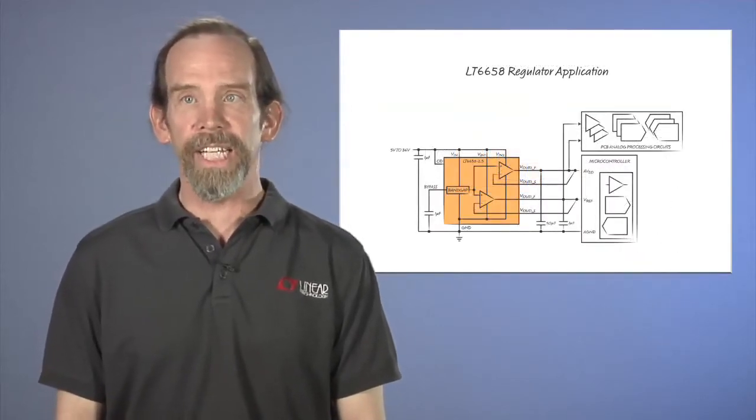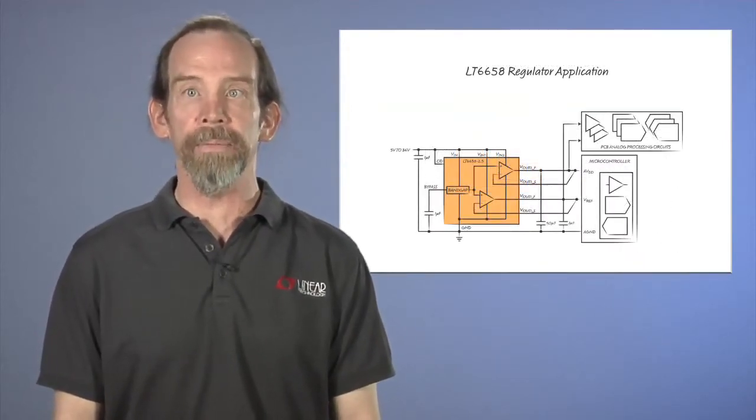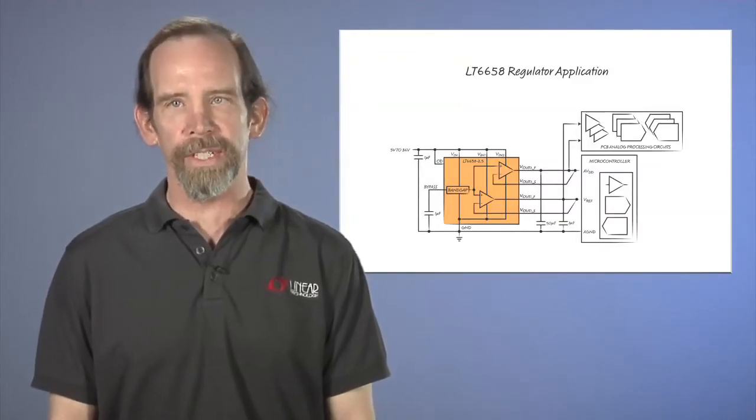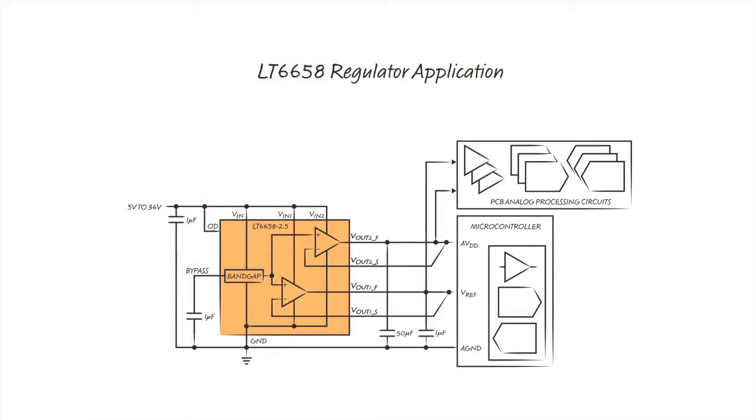The LT6658 is also ideal as a regulated power source for microcontrollers and precision analog circuits. With the dual reference and regulator capability, the LT6658 allows the elimination of unneeded regulators, their supporting components, board space, and routing. It can improve sensitive analog circuit design by localizing power distribution.